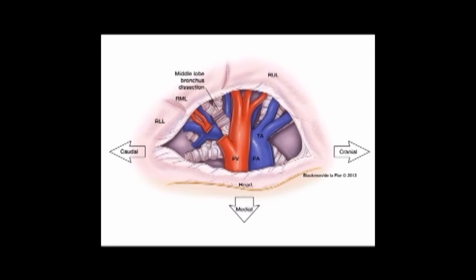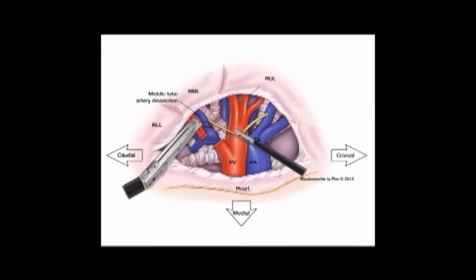Once the pulmonary vein branches have been divided, you should encounter the bronchus going to the right middle lobe. This structure is encircled, stapled, and divided using a bronchial staple load — with Covidien a purple load, or with Ethicon a blue or green load, typically a blue load. Once the right middle lobe bronchial branches have been divided, it will be easier to see the pulmonary artery branches coming off of the basilar branch and going to the right middle lobe. It is important to note that this is exactly opposite the superior segment right lower lobe branch on the opposite side of the pulmonary artery.